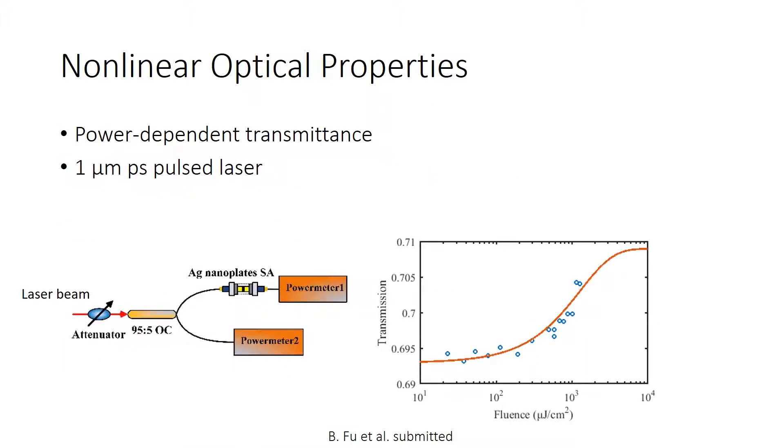The nonlinear optical properties can also be measured by power-dependent transmittance measurement. In this case, we use a 1 micron pulsed laser with pulse duration in the picosecond range.